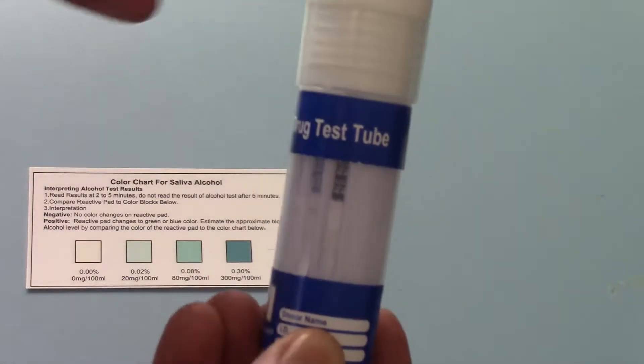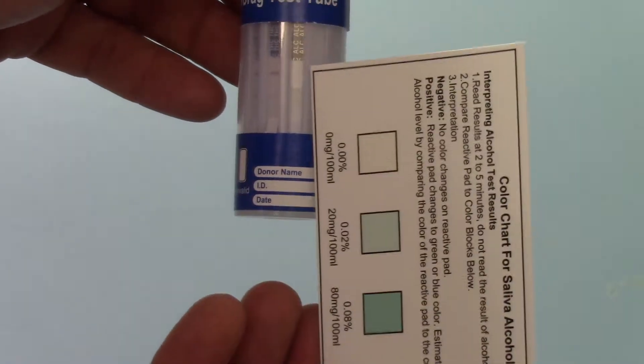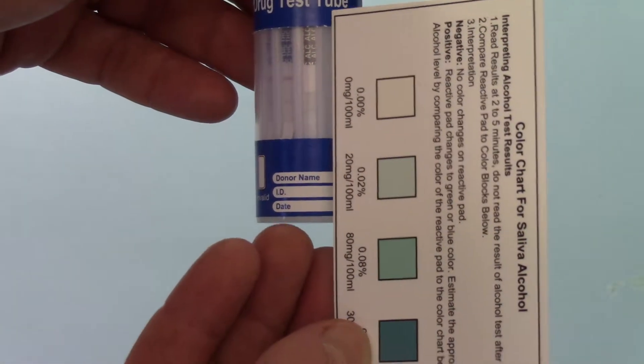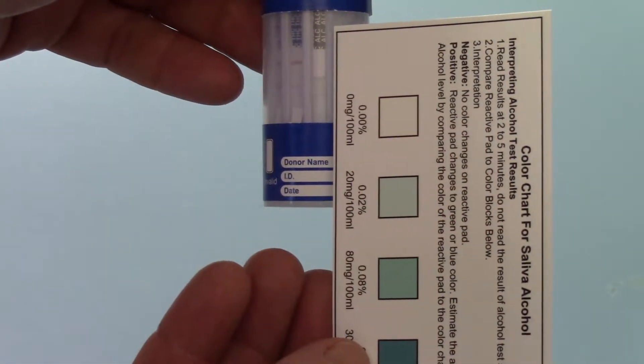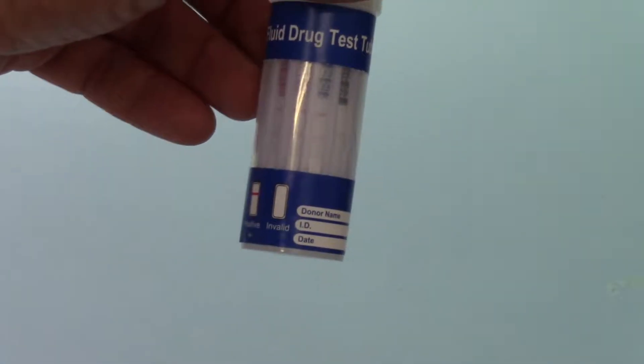So let's read that one first. We're looking for a comparison against this color chart and this one is very clearly all negative. There's no blue discoloration on that one at all, so that does not indicate the presence of any detected saliva or blood alcohol.